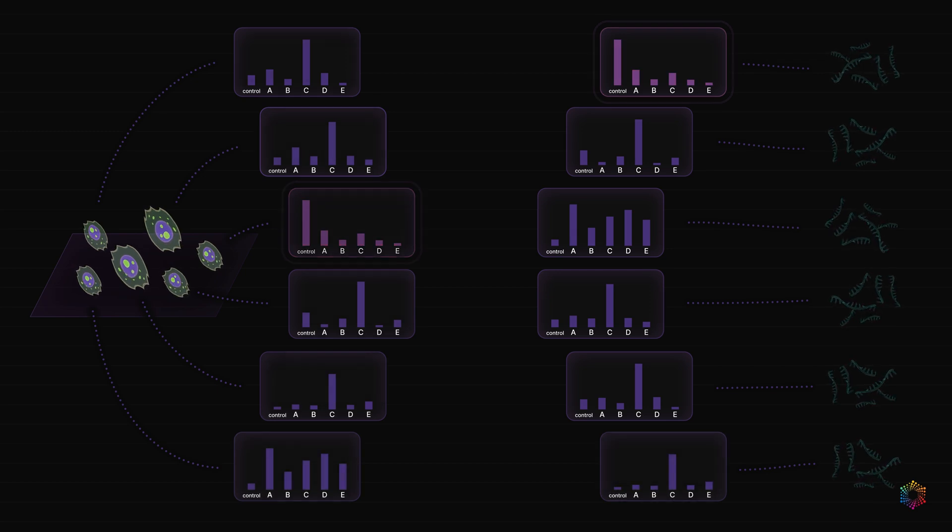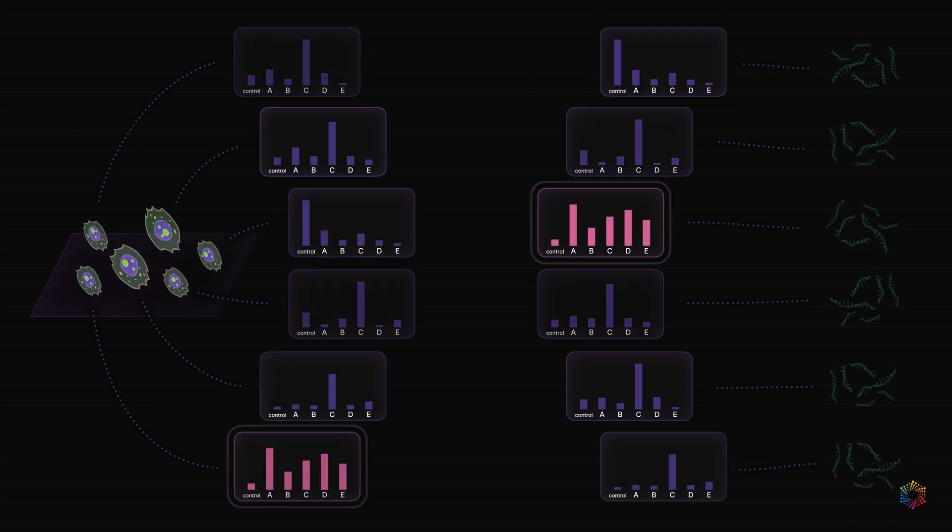And finally, we may have cells that had numerous off-target effects from the CRISPR guide. For these cells, the classifier's predictions will tend to look very different from everything else in their respective modalities.